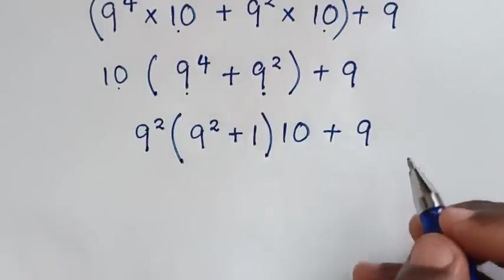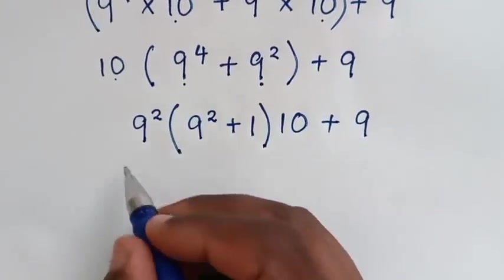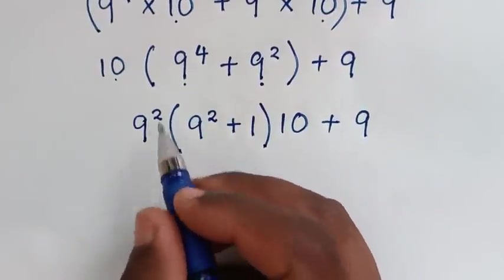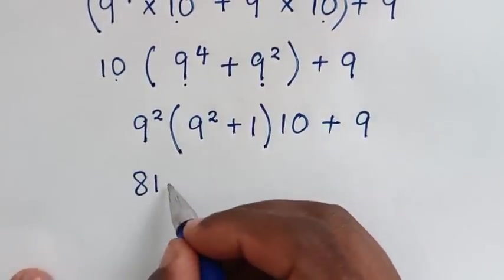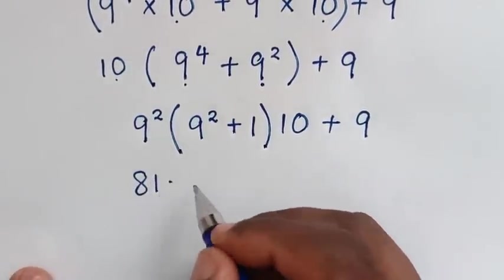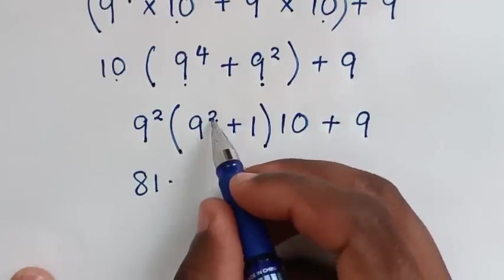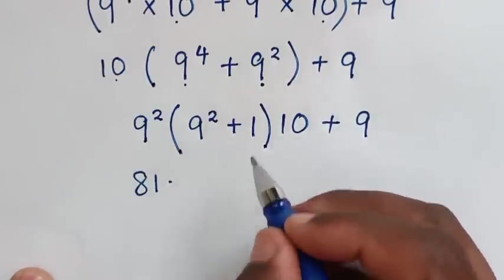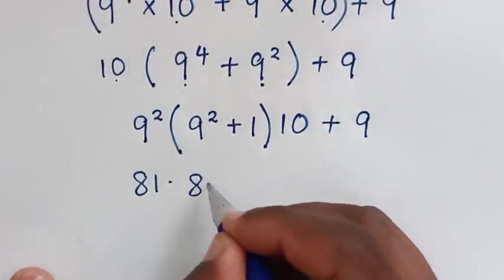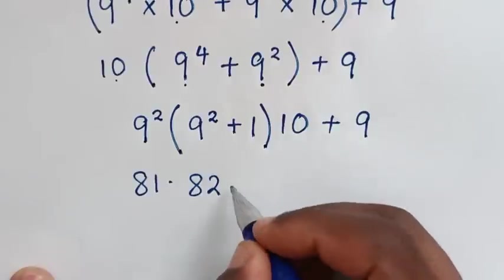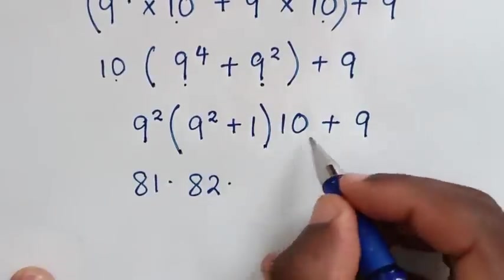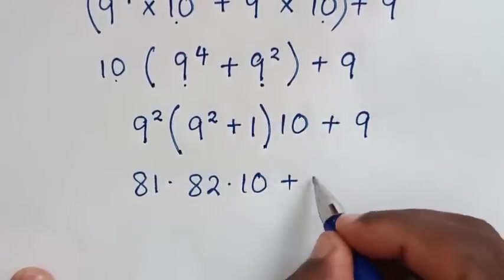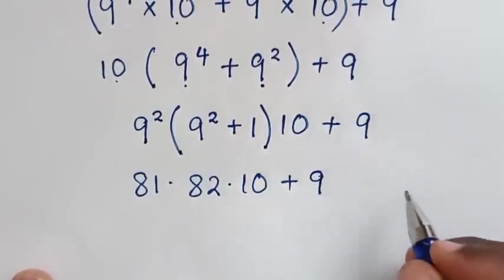Then in the next step, 9 power 2 is 81, then times 9 squared is 81. 81 plus 1 is 82, then times this 10, then plus this 9.